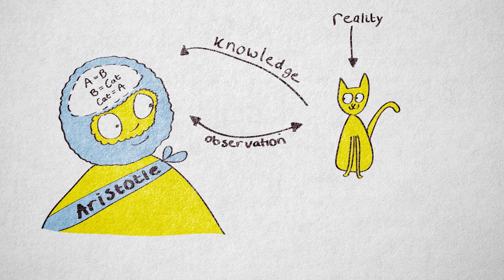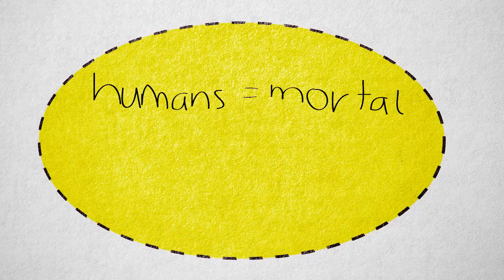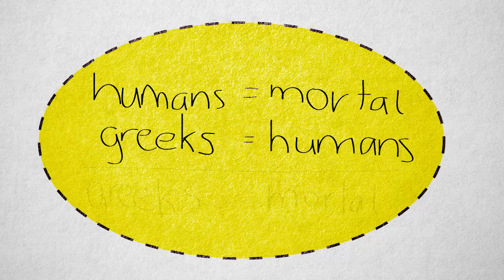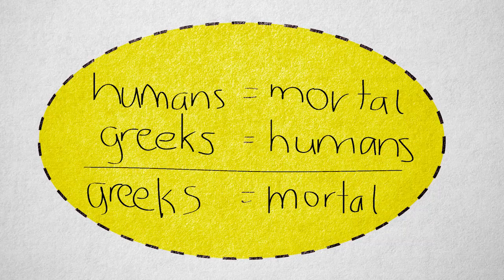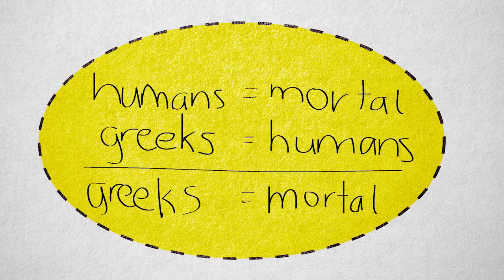Here's an example of a syllogism. All humans are mortal, all Greeks are humans, and therefore all Greeks are mortal. If the two premises are true, then the conclusion is necessarily true.